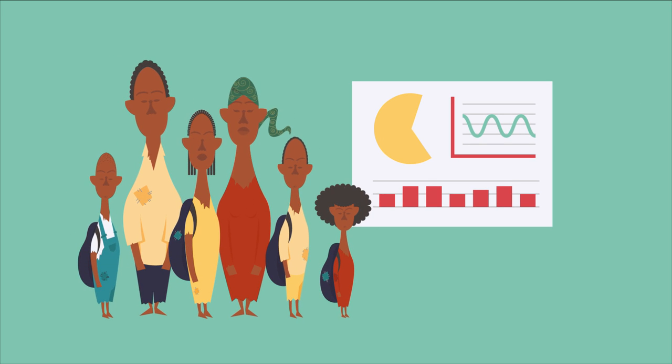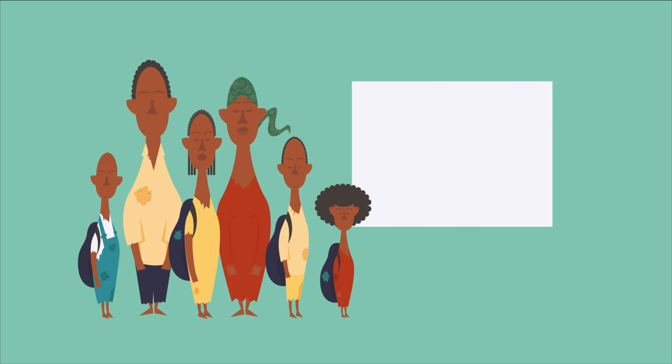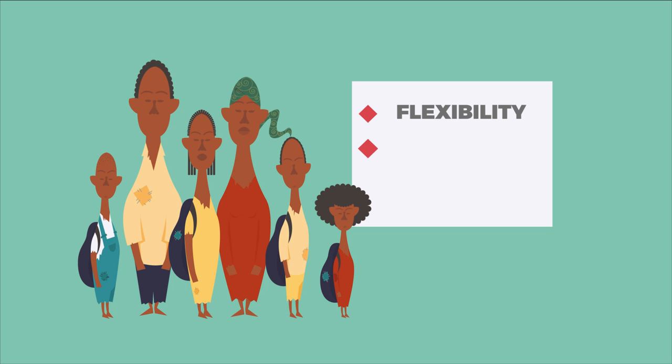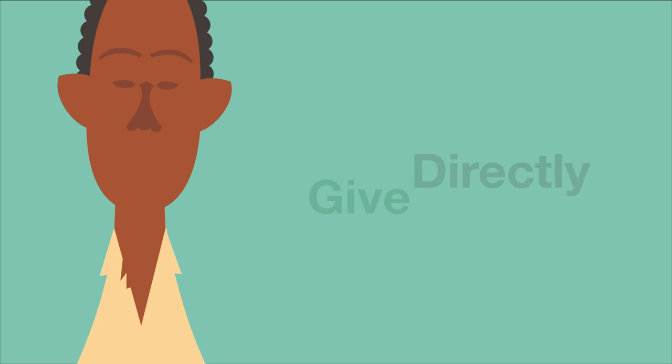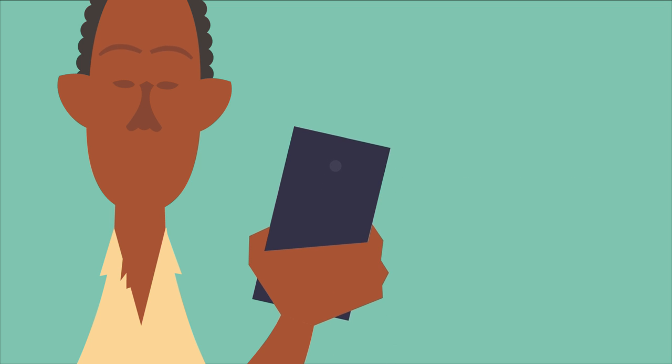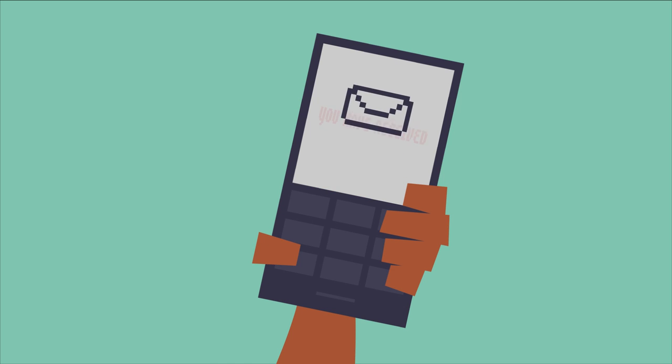What if we could put the decision-making power back into John and Alice's hands and give them flexibility, choice, and dignity with something simple like cash? Now you can. GiveDirectly connects you to the poor using mobile payments technology so that you can give directly to them in the most efficient way possible.